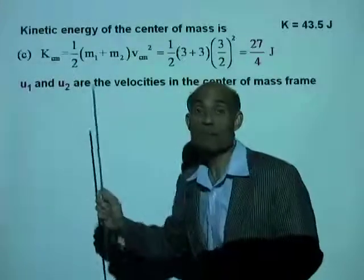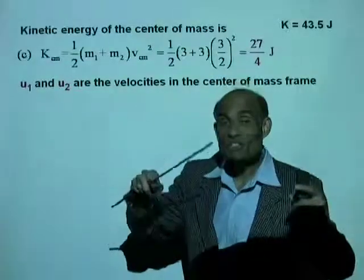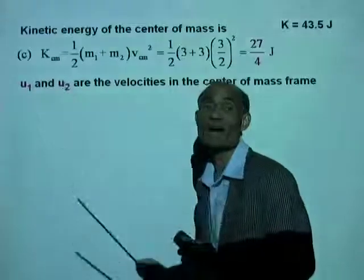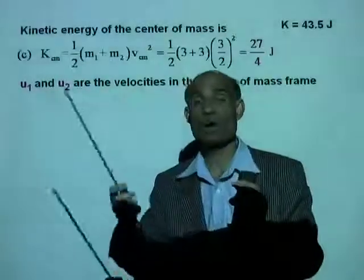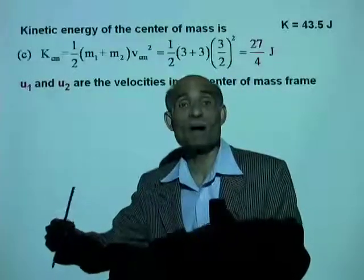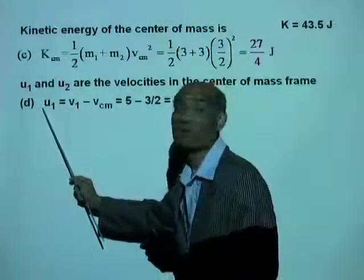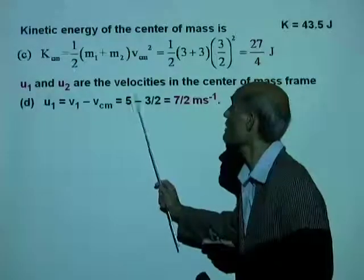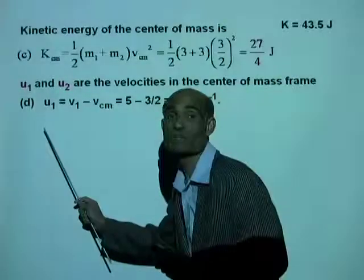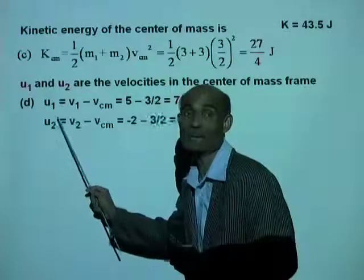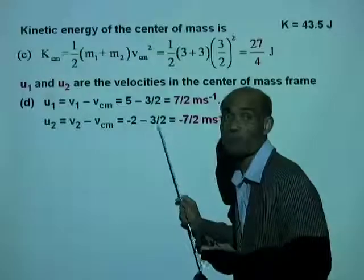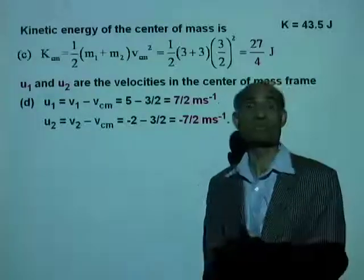We now need to find the velocities of the two objects relative to the center of mass - measured from the center of mass. Let's call these velocities U1 and U2. U1 is the velocity of the first object relative to the center of mass: U1 equals V1 minus V_cm, which is 5 minus 3/2, giving 7/2 meters per second. U2 is the velocity of the second object relative to the center of mass: U2 equals V2 minus V_cm, which is negative 2 minus 3/2, giving negative 7/2 meters per second.